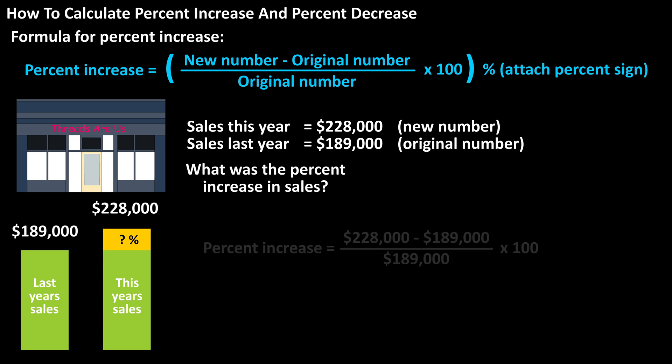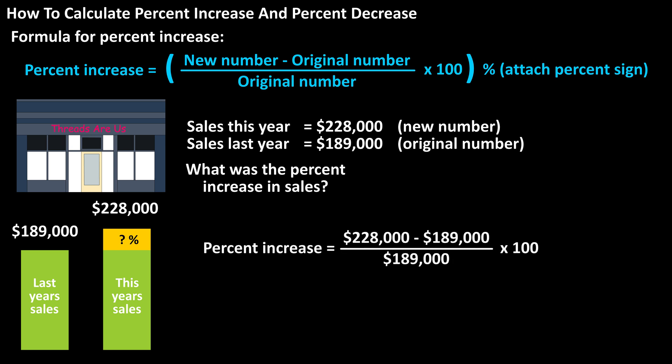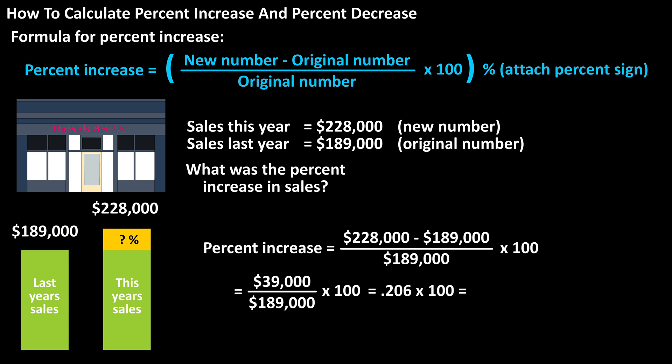Using our formula, we have: percent increase equals $228,000 minus $189,000, divided by $189,000, times 100. That gives us $39,000 divided by $189,000, which equals 0.206 rounded off.